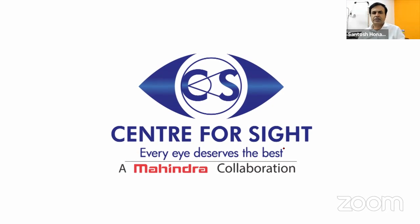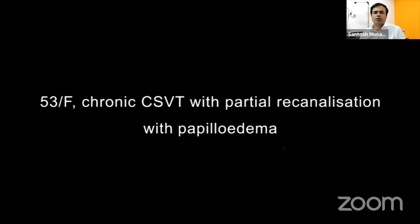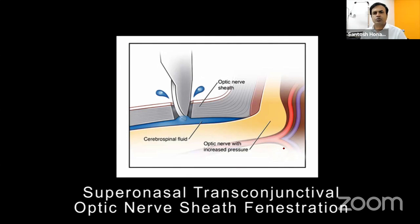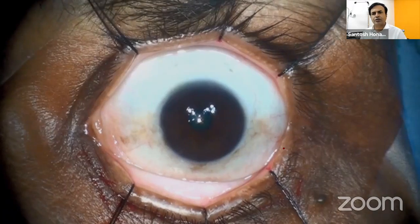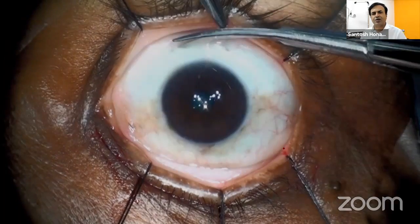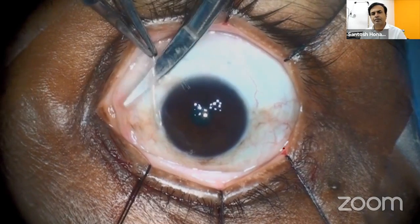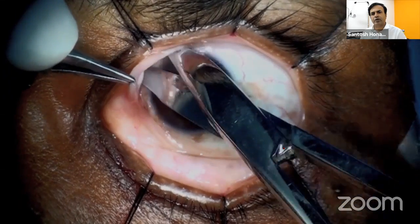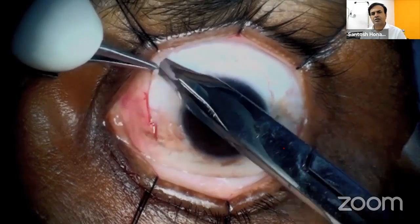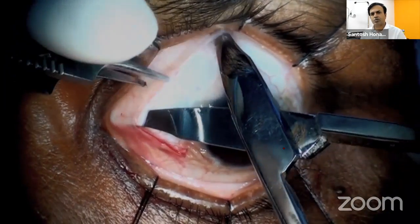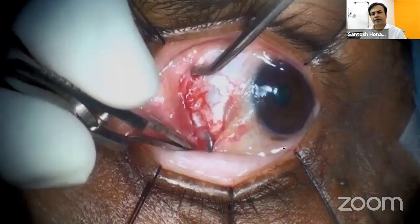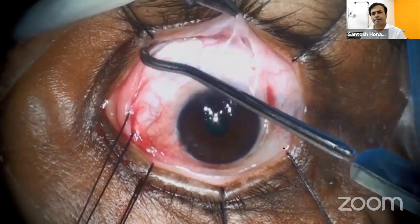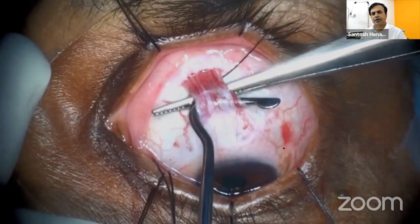The transconjunctival approach can also be used for optic nerve sheath fenestration in benign intracranial hypertension. The supranasal transconjunctival approach is very simple: a supranasal conjunctival incision 3–4 mm from the limbus, sub-Tenon's dissection, then hook the medial and superior recti with bridle sutures of 4-0 silk, retract the eyeball laterally and inferiorly, and bring in an orbital retractor.